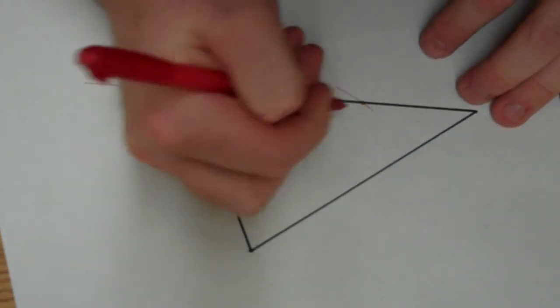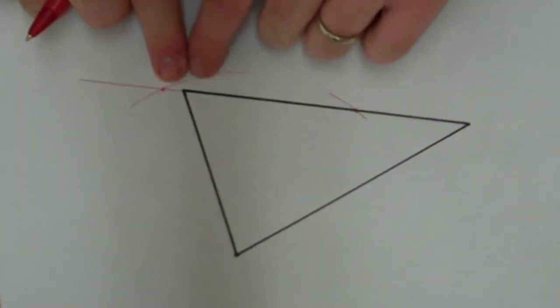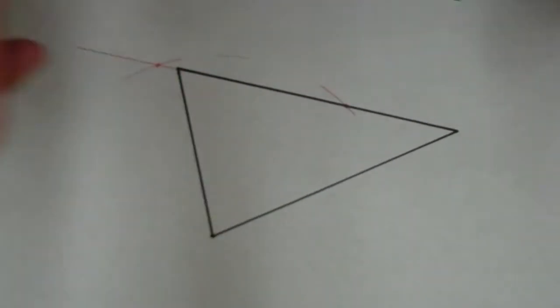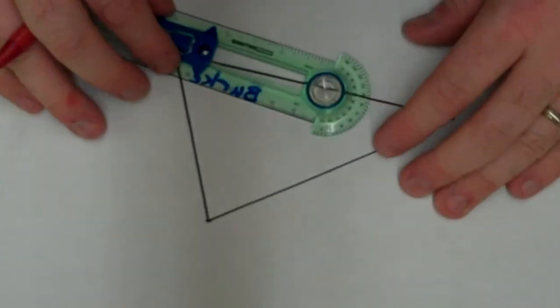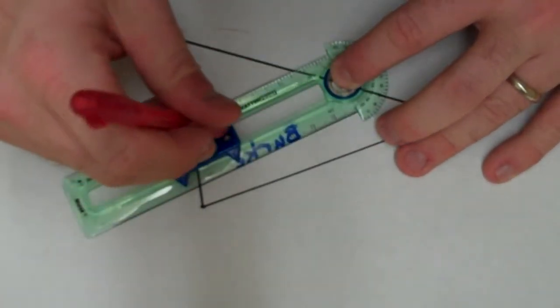And now what I've created is I've created a segment that is part of this side and if I do the perpendicular bisector of this segment, it should go right through that point. So now I'm going to follow my perpendicular bisector construction. You should all be a pro at this one by now.